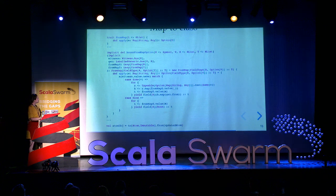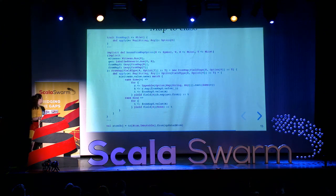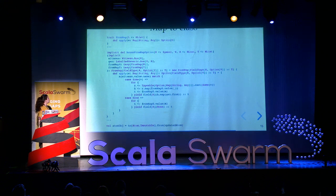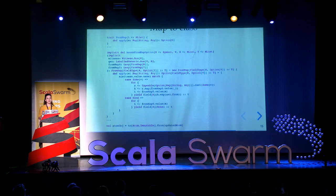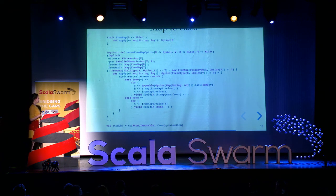Now that we have a map, let's assume we've updated the field and we have to go back to a case class. This just mirrors the previous implementation — it has a bunch of implicits and some logic to deal with the map. In this case we are taking a Map from String to Any and returning an Option of an HList. The meaning of the Option is that it is a Some of an HList if the conversion was successful, but it returns None if the conversion failed. I don't have enough time to go into detail on that one — you'll just have to trust me that this works.